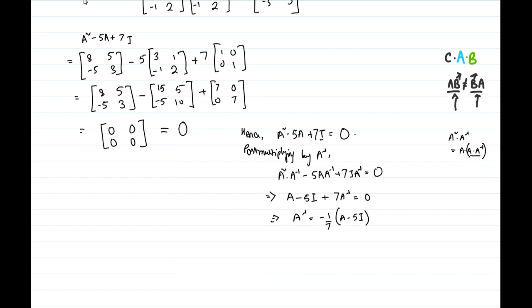From this, A inverse equals (1/7) times [2, -1; 1, 3]. That is the result for A inverse. We'll stop here today; in the next video I'll discuss from question number 14 onwards. Thank you very much for watching. For any doubts, please comment in the comment section and I will reach out as much as possible.